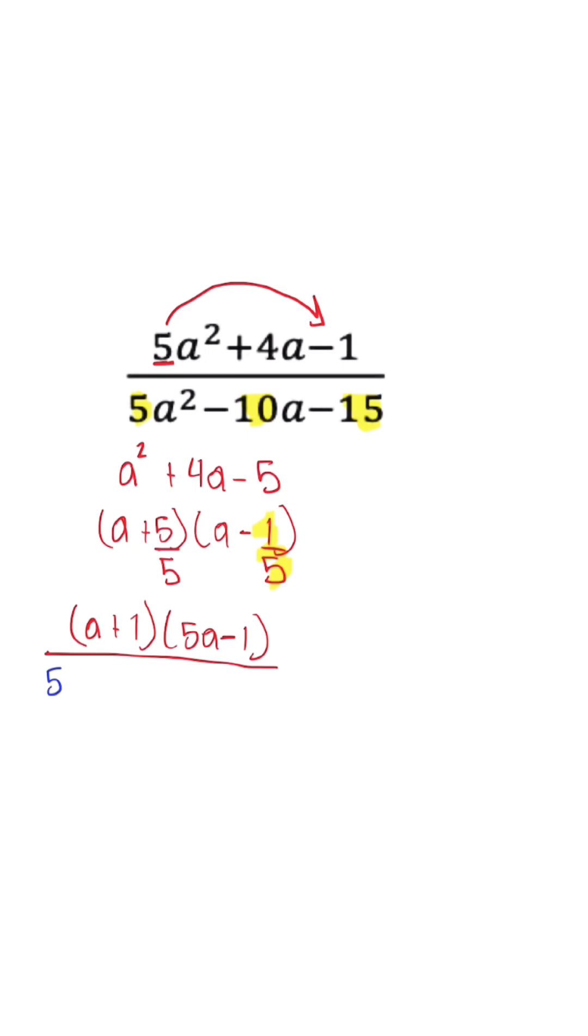So when we pull that 5 out, what we're going to be left with is a² minus 2a minus 3. So now we further factor this, and what we're going to have on the denominator is 5 on the outside, (a-3) times (a+1).